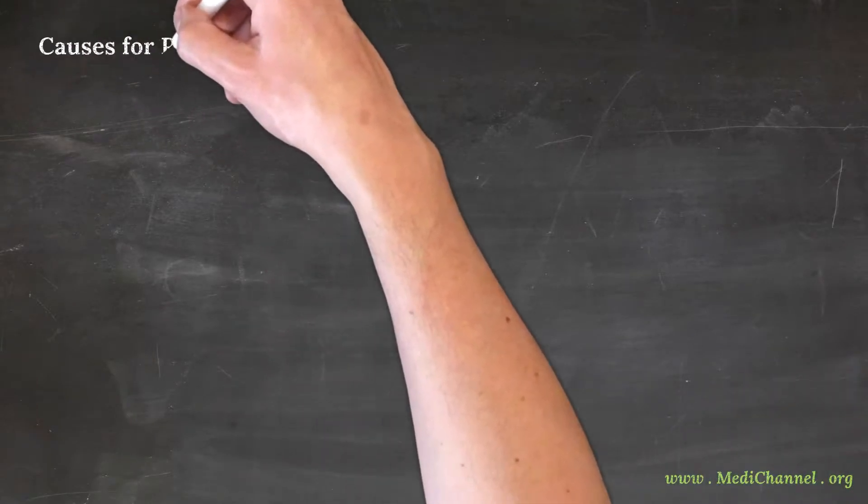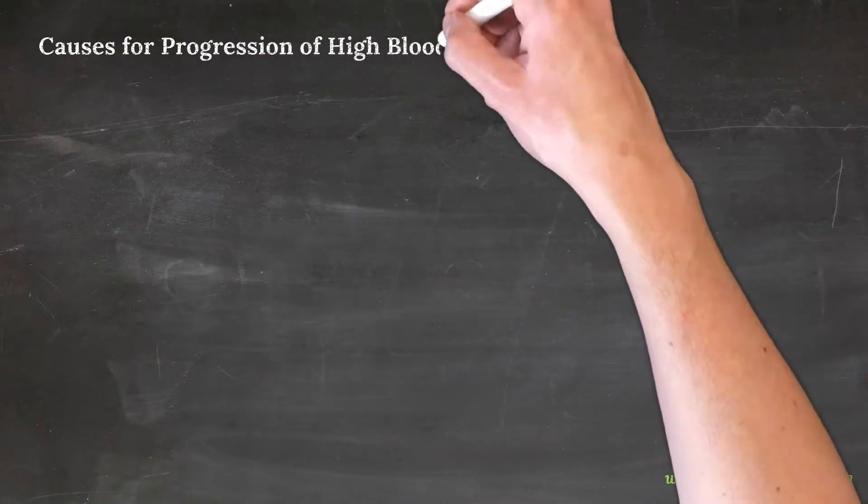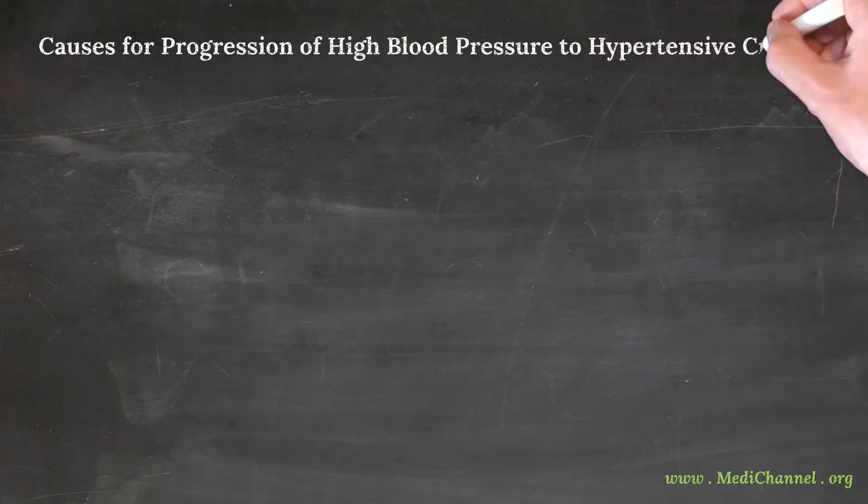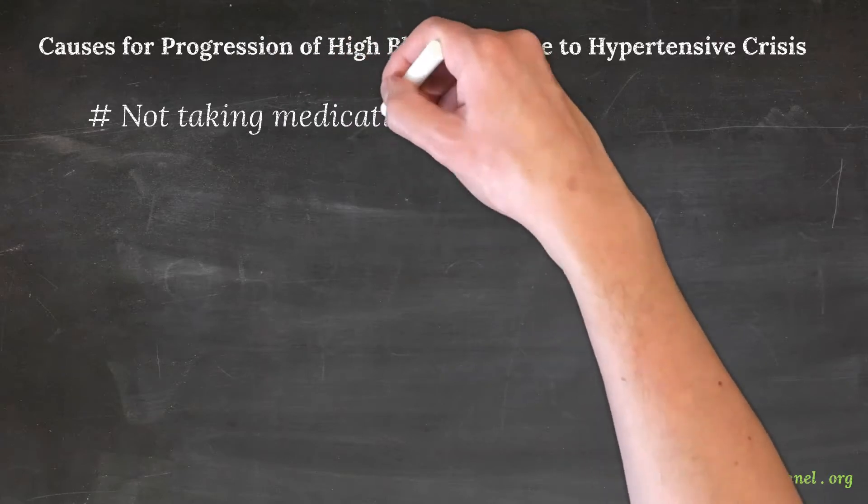While different factors like age and genetics may initiate early stages of hypertension, the crisis level is caused by one or many of the following reasons: not taking the medication for blood pressure, heart attack, heart failure or stroke,